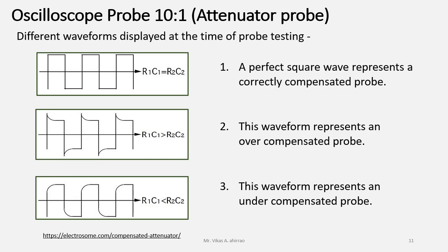So, when we have to test the probe and use it, we must get a correctly compensated probe. That is, at the time of probe testing, we should have a perfect square wave. And if we are getting the waveforms like shown here, as in figure 2nd and 3rd, then we have to adjust the trimming capacitor till we will get a perfect square wave.